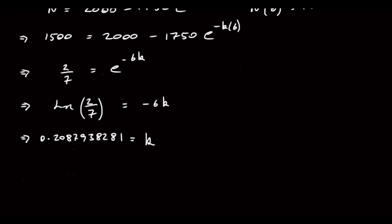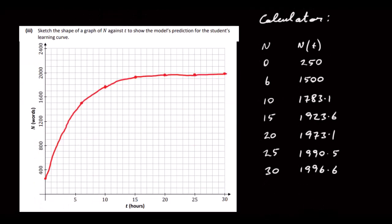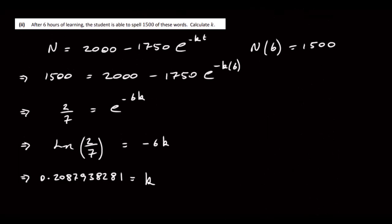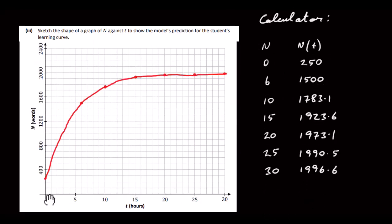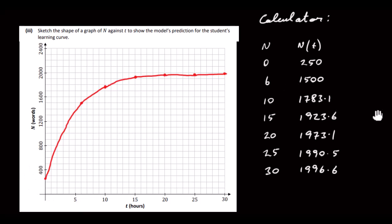The final part asks to sketch a graph of n against t showing the model's predicted learning curve. I put the formula n = 2000 − 1750e^(−kt) with k ≈ 0.2088 into my calculator, evaluated from t = 0 to t = 30 in steps of 5, and plotted the table of values. Note that t = 6 giving n = 1500 is already included. That's it for this question.